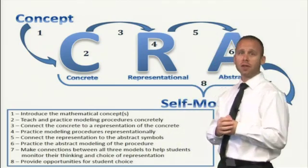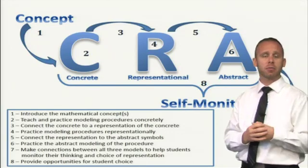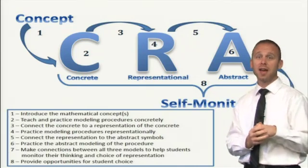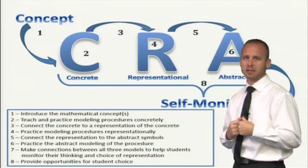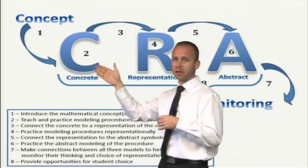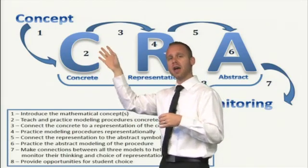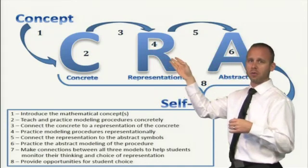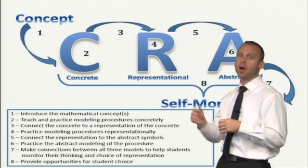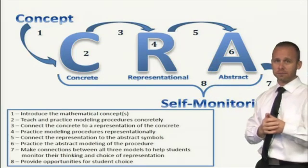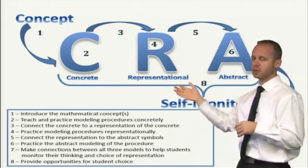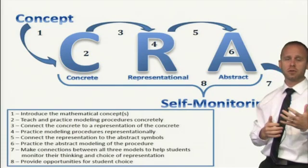To recap: working on CRA with students doesn't happen in one single day — it's a process, and we do not work the entire sequence with one individual problem. We need to plan for students to first understand the concept, then introduce them to the concrete way of thinking, then teach them how to connect that concrete work to drawing pictures for the representational stage. They practice representationally, then we teach the transition into the abstract and give them opportunity to practice there. While practicing in the abstract, we must keep making connections across all representations so that students are able to monitor their own thinking.